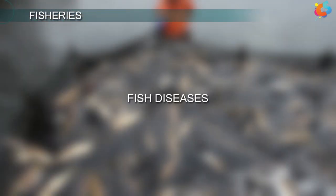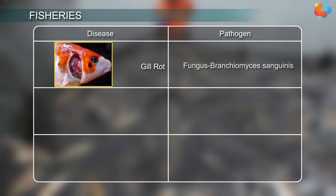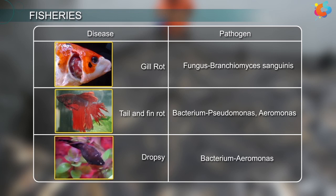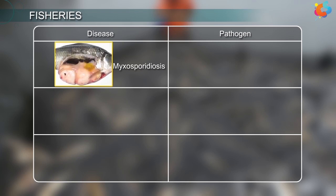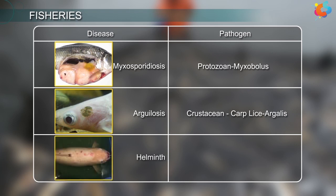Fish Diseases: Here are some of the common diseases that affect fishes. Gill rot disease — Fungus Branchiomyces sanguinis; Tail and fin rot — Bacterium Pseudomonas/Aeromonas; Dropsy — Bacterium Aeromonas; Myxosporidiosis — Protozoan Myxobolus; Argulosis — Crustacean Argulus; Helminth disease — Flatworm Gyrodactylus, etc.